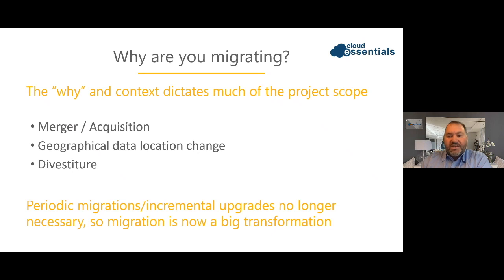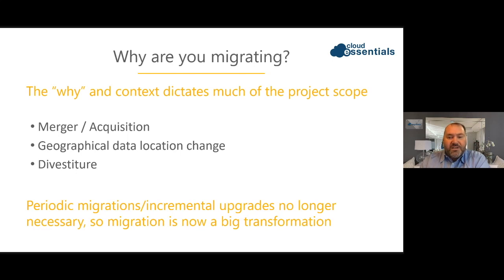It sounds obvious, but the 'why' dictates so much of the project scope when you start to build the after-requirements and set expectations for the challenges you need to overcome. In tenant migrations particularly, we've worked in a diverse range of contexts — from high-profile acquisitions to amalgamating disparate tenants operating in silos, to highly sensitive divestitures with lots of politics and Chinese security walls to factor in. We've even seen a tenant migration required because someone made a really poor choice in naming their tenant with the IT admin's name in the initial setup, and suddenly this name appeared in many of the URLs and links being used. The reasons for migration establish a range of questions you really need to consider to create the policies, controls, and settings in the new tenant.